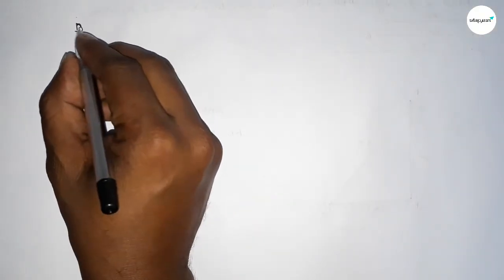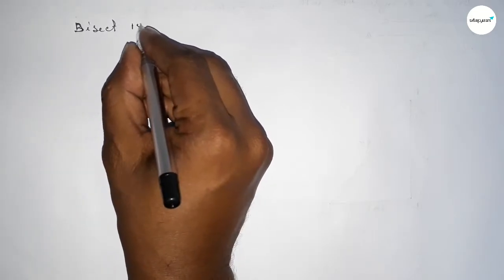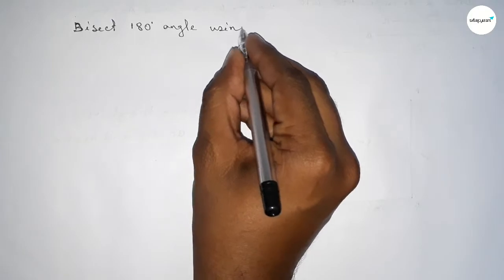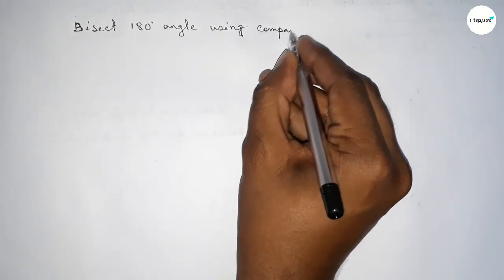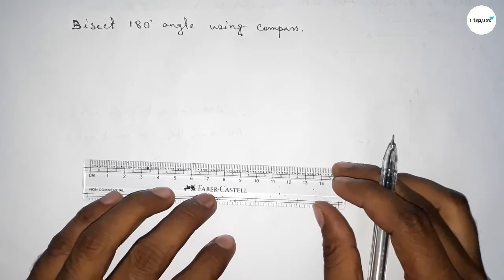Hi everyone, welcome to SSR Classes. Today in this video we have to bisect a 180 degree angle by using a compass. So let's start the video. First of all, we have to draw here a line.